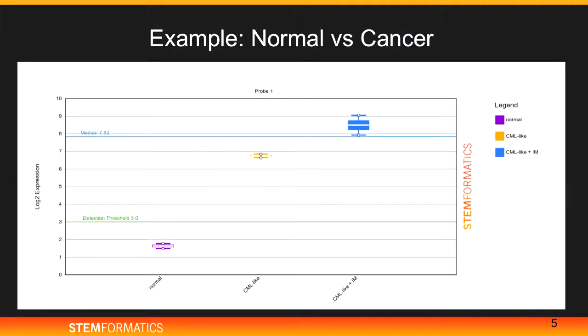Or maybe there are some genes that are turned on in the control samples but turned off in the disease sample. So if we stop these genes, that might stop the disease from occurring. This is how it looks in a graph. The purple dots are samples taken from a healthy human being, and the yellow and blue ones are taken from cancer samples. The purple ones are very lowly expressed, while the yellow and blue ones are highly expressed. Biologists come to Stimformatics to find these biological patterns that are easy to visualize.